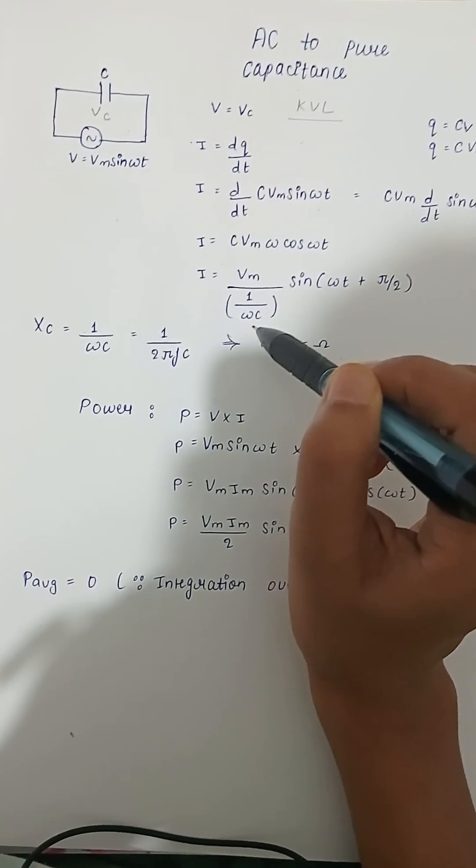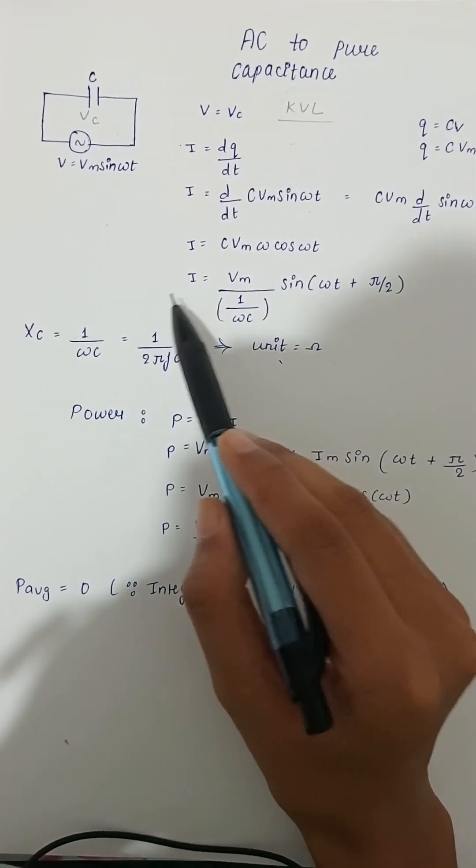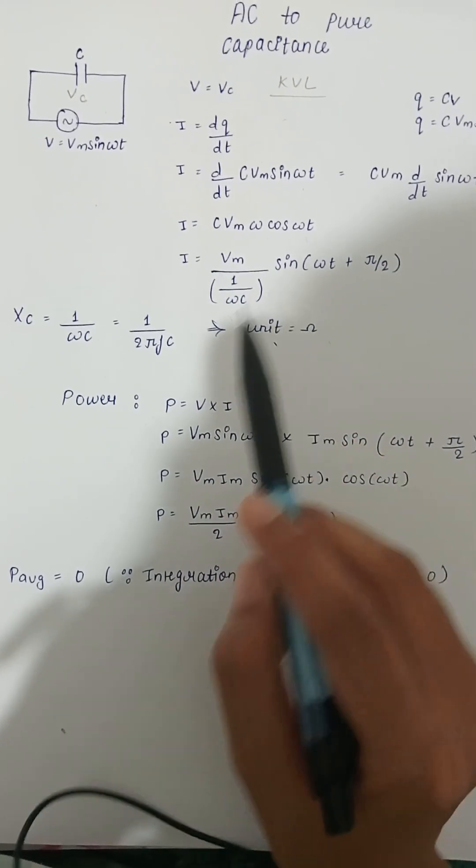Now one upon omega C is equals to XC, so the unit of XC is ohm. Now power.